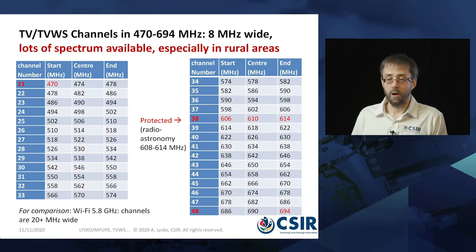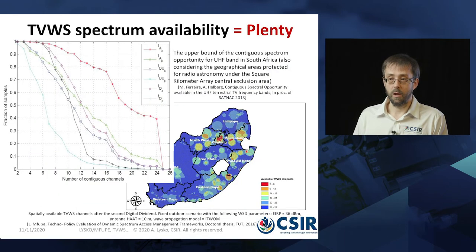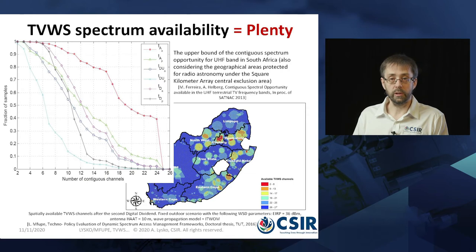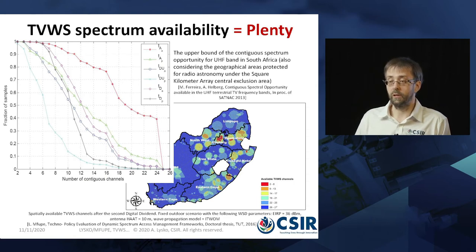TV white space refers to a portion of spectrum that is borrowed from TV broadcasting. You can see the traditional channel locations from channel 21 to channel 48, and this spectrum is reused in areas where it is not used by TV, for communications. Research done roughly a decade ago showed that in South Africa and most other countries, there is plenty of spectrum available for communications, especially in rural areas. If you look at the blue areas on the plot, they show the maximum availability of spectrum, and as you can see, this applies to most of South Africa.